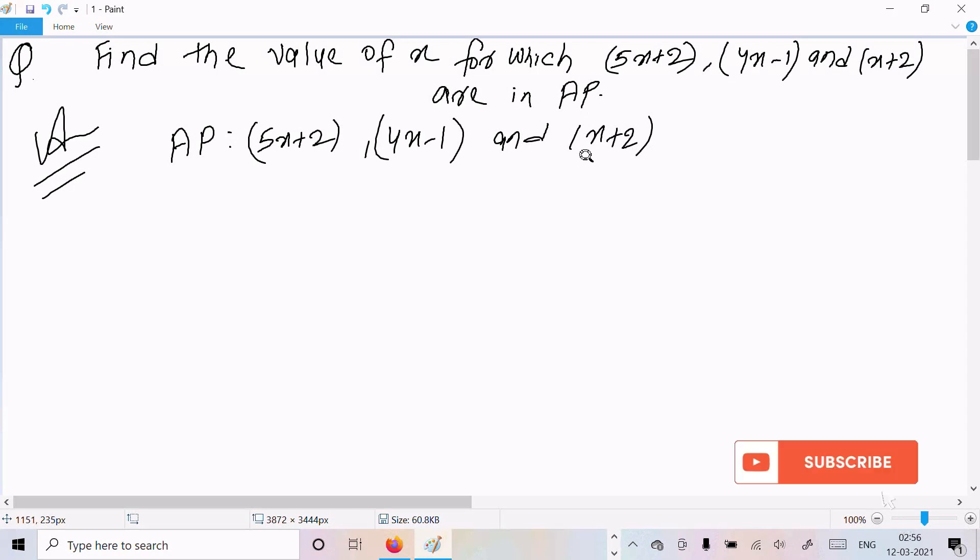Now here this is the difference. a is the first term 5x plus 2, so there is no need of first term and we know the difference. So here difference is d. Suppose d is the difference between consecutive terms.